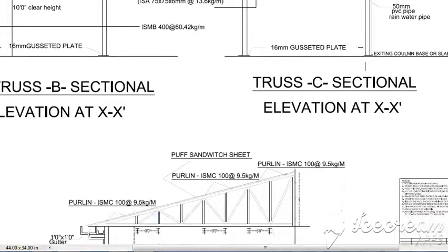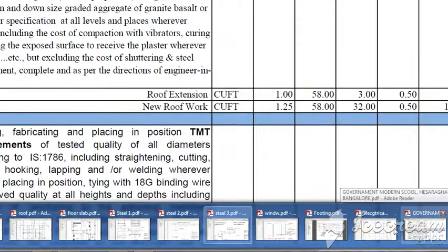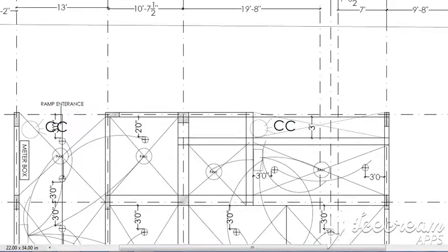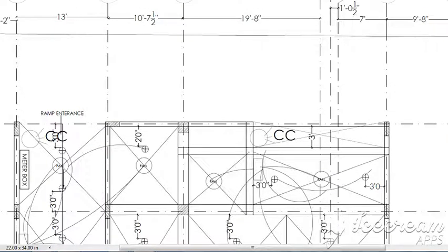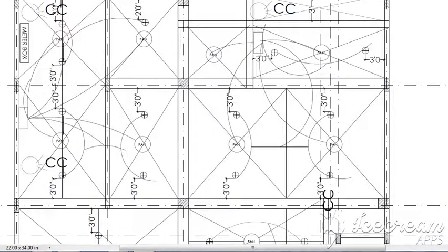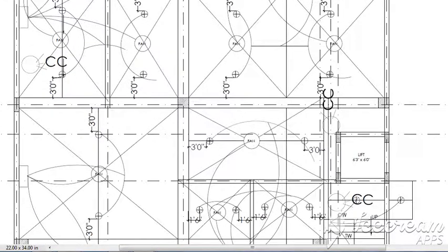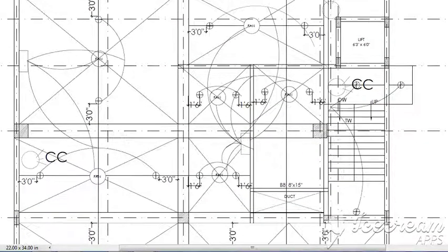Preparation of BOQs for these trusses will also be taught in detail. Apart from this, one of the important things is that electrical plans will also be considered for preparation of BOQs, which is much important and needed in today's market. Quantity surveyors are normally asked to prepare BOQs for electrical works also. An electrical plan like this will be considered and detailed quantity takeoffs — the number of points to be installed, the conduits to be run out, the wires to be considered — all this will be discussed.